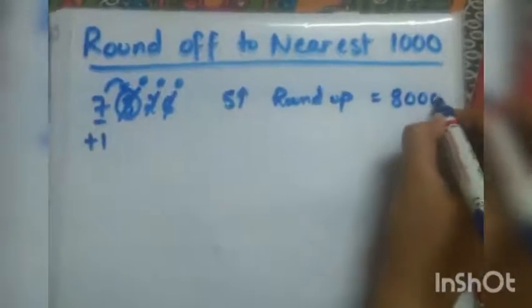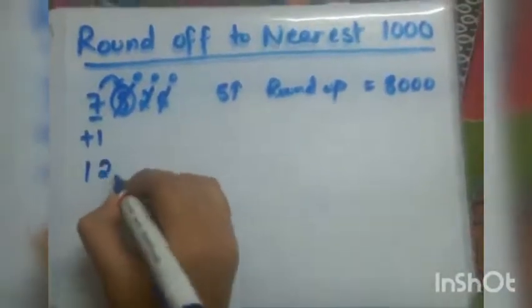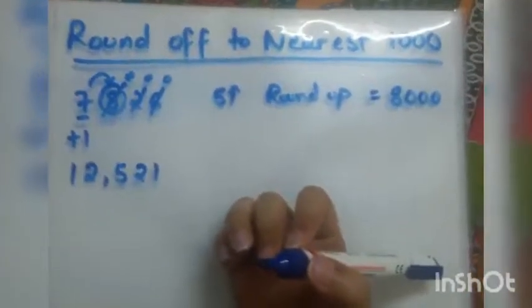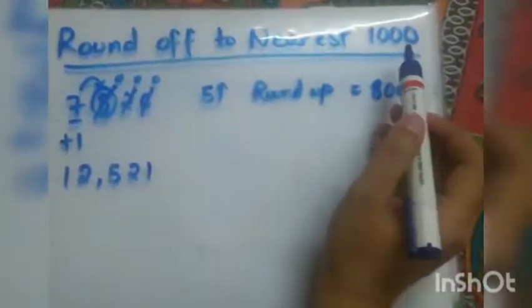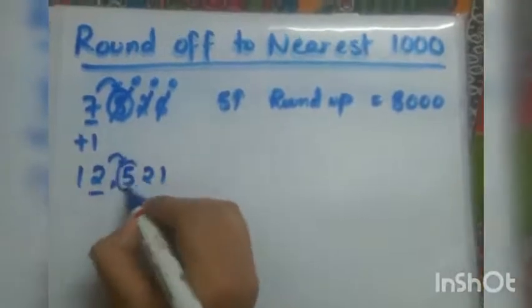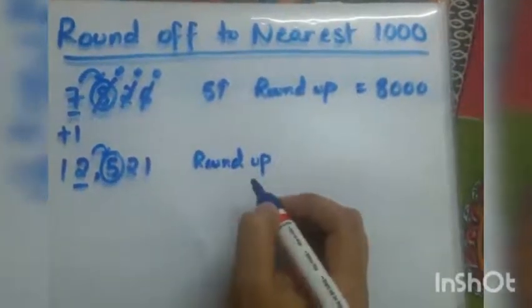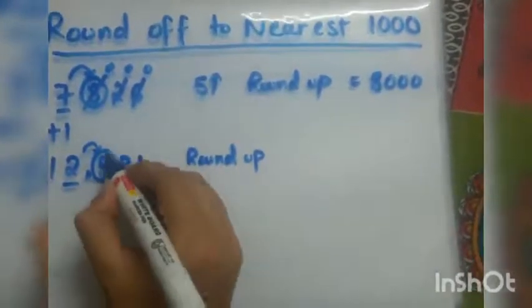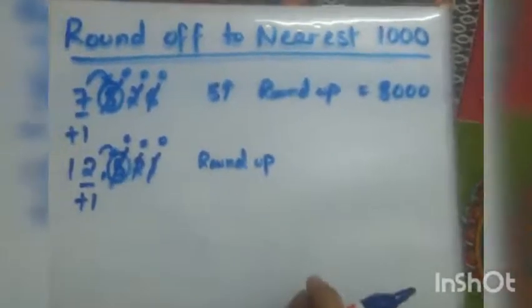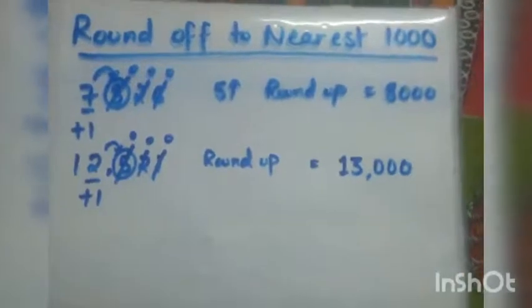Now let's take another example: 12,521. We are taking larger numbers now. The number in the thousands place is 2. The number to the right of 2 is 5. When we have 5, we consider it as round up — 5 is always treated as greater than 5. So in round up, the digits after thousands become zero, and 2 gets plus one. So 12,521 becomes 13,000.